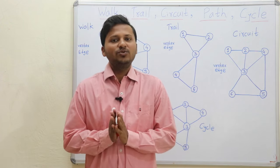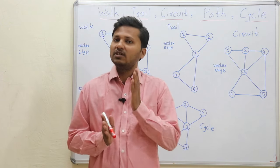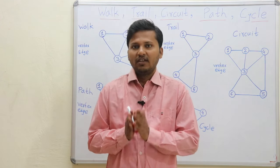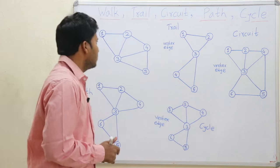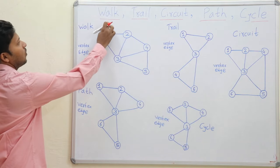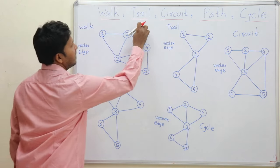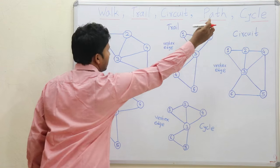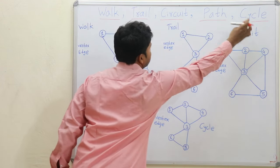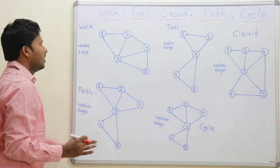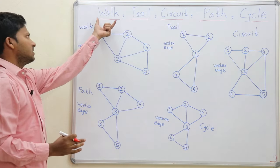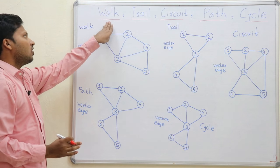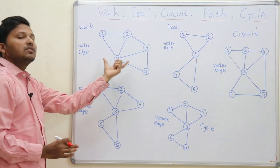Hello friends, today we are going to see some terms in graph theory. Those terms are walk, trail, circuit, path and cycle in a graph. Let's first see what is a walk in a graph.